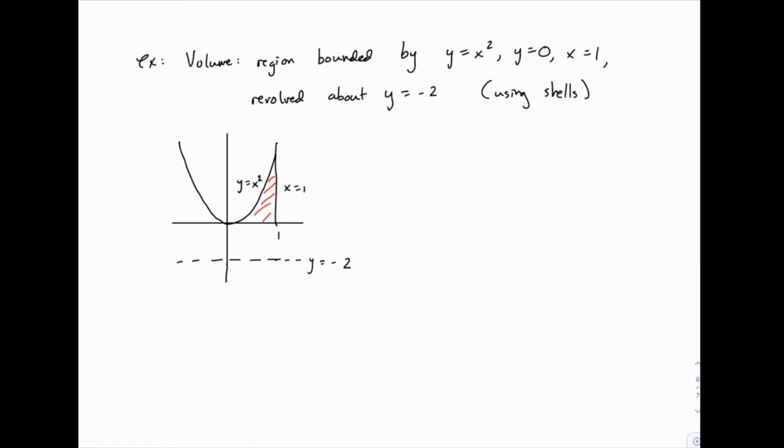So if you take that and revolve it around this horizontal line y equals negative 2, on the other side you'll have something like this, and then a three dimensional picture that fills that in.